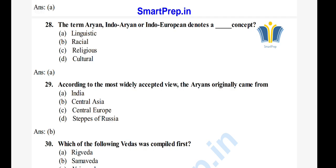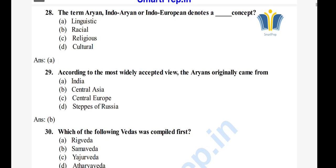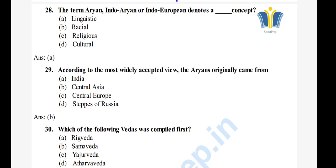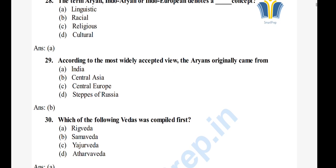Question 30: Which of the following Vedas was compiled first? Options: A) Rigveda, B) Samaveda, C) Yajurveda, D) Atharvaveda. The right answer is option A, Rigveda.